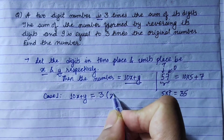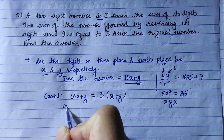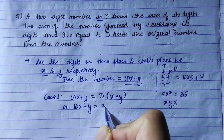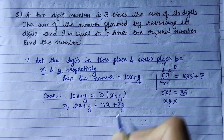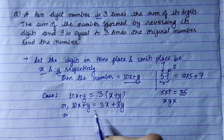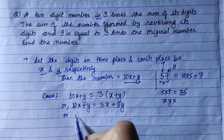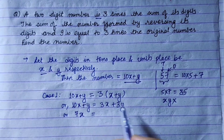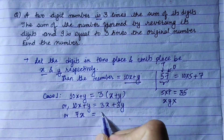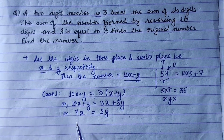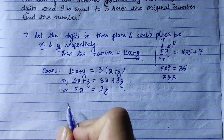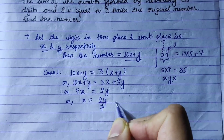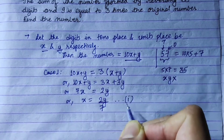The sum of digits is x plus y. Let's simplify: 10x plus y is equal to 3x plus 3y, which gives us 7x equals 2y. So x is equal to 2y divided by 7. This is equation 1.